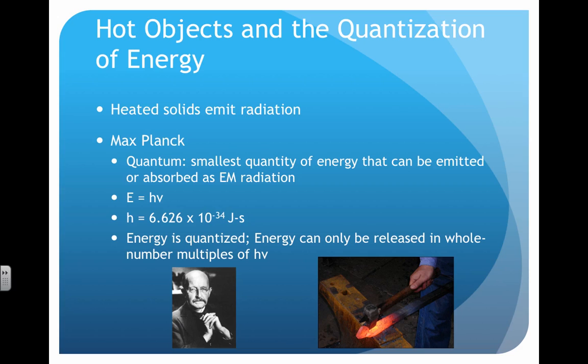Elements, when they underwent flame tests, would always give off the same signature types of colors, leading him to believe that energy was being absorbed in discrete packets, which he called quantum. He was able to actually quantify the energy of these quantum by using this very simple equation: E equals hν. E is the energy of the quantum, h is a constant called Planck's constant, and ν is the frequency of the radiation.